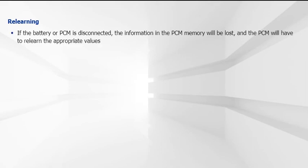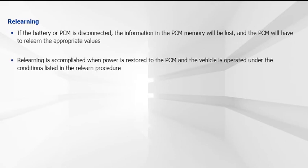Adaptive strategies are part of the PCM programming that allows it to compensate for component wear and other conditions affecting drivability and emissions. These strategies are based on information stored in PCM memory, which is a volatile form of memory. Consequently, if the battery or PCM is disconnected, the information in the PCM keep-alive memory will be lost, and the computer will have to relearn the appropriate values. Re-learning is accomplished when power is restored to the PCM and the vehicle is operated under the conditions listed in the manufacturer's re-learn procedure.